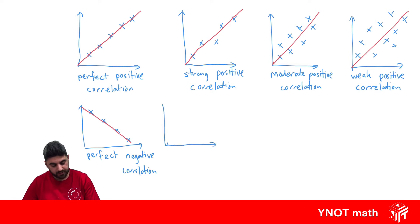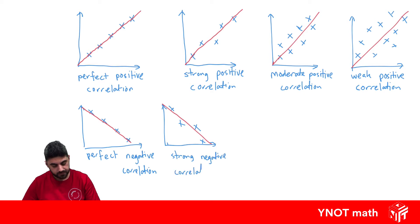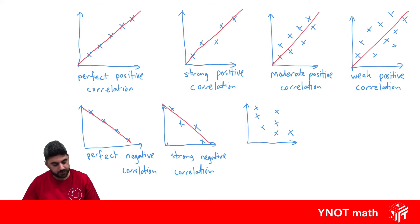We have something similar for all the other ones. So a strong negative correlation — it wouldn't be perfect, but it almost lines up. And here we've got a strong negative correlation. A moderate negative correlation is going to be something like this, where it's showing a relationship in the negative direction and the data is kind of spread out. So this is a moderate negative correlation.